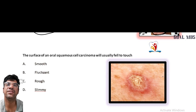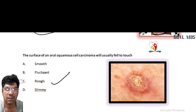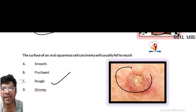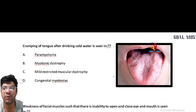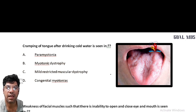The surface of oral squamous cell carcinoma usually feels rough to touch. This roughness is due to the irregular, ulcerated, or nodular nature of the tumor.